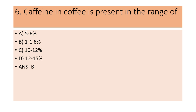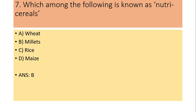Sixth question: Caffeine in coffee is present in the range of 5–6%, 1–1.8%, 10–12%, or 12–15%? Answer is B: 1 to 1.8 percentage.